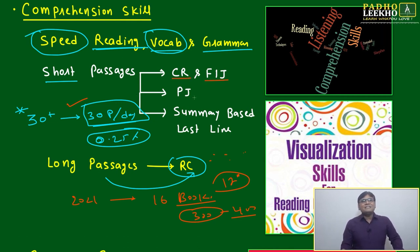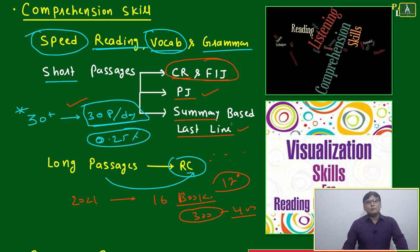Short passages are asked in three ways: one is critical reasoning and FIJ format, next is your PJ parajumbles, and third is your summary-based last line. For CAT point of view, generally now for many years, they're not asking CR and FIJ. They're asking PJ, summary-based questions, and last line questions. These three types of questions depend on short passages.